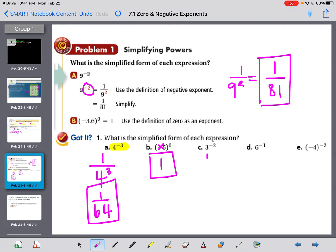3 to the negative 2nd means I need to put 3 to the 2nd on the bottom. And 3 to the 2nd power is 9, so I have 1 over 9. 6 to the negative 1 means I need to put 6 to the 1st on the bottom. And 6 to the 1st power is just 6, so I have 1 over 6.